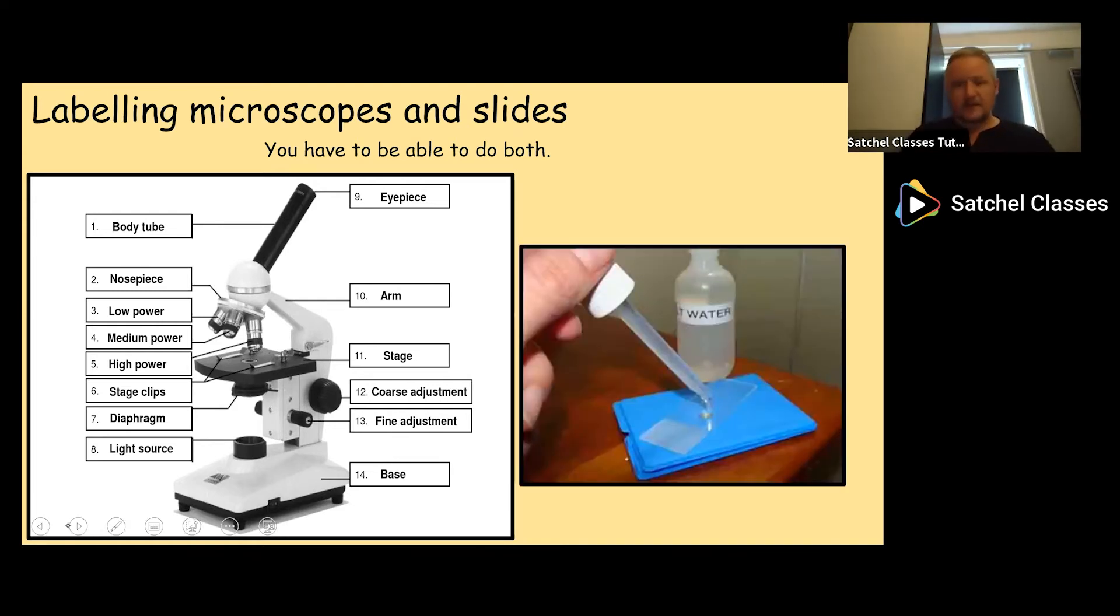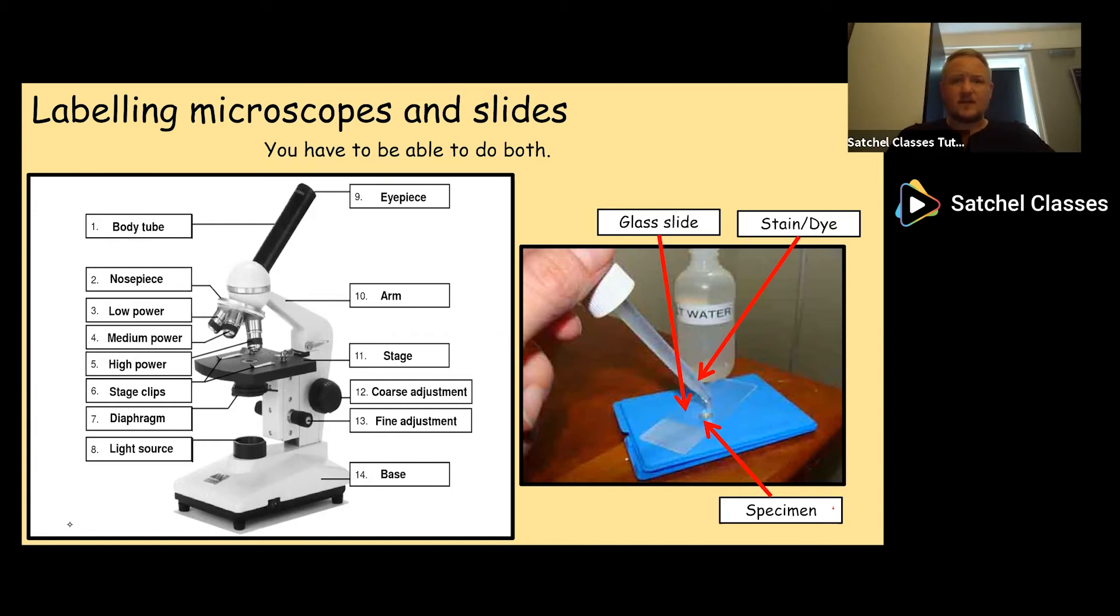Then there's the slides themselves. This is one I took a photograph of in the lab. What you can see here is the slide itself, the glass slide. The specimen would be placed in the center of the glass slide. To that specimen, you would add a stain, a dye, or even just water. If it's a transparent specimen, for example, if I was peeling the top layer of onion skin cells off to look at the onion cells, I might add a stain. If it's not transparent, not see-through, then you might just use water to hold it in place. Finally, there's a cover slip, a thin piece of glass that goes over the top of your specimen to hold it in place and prevent it from drying out.